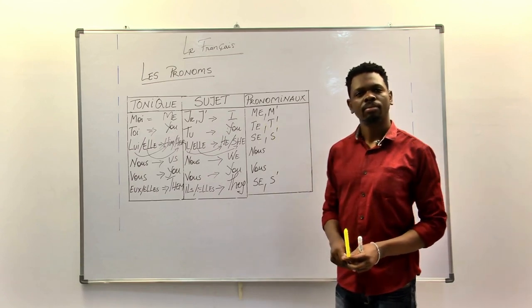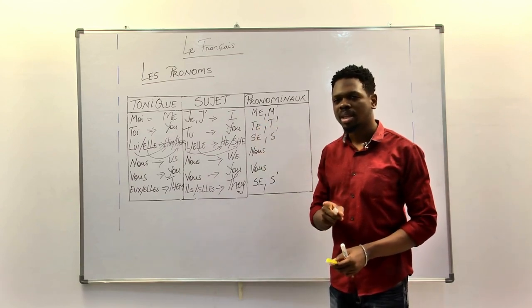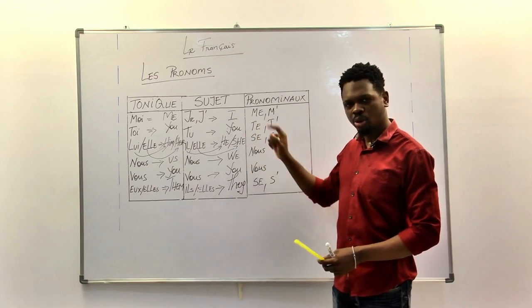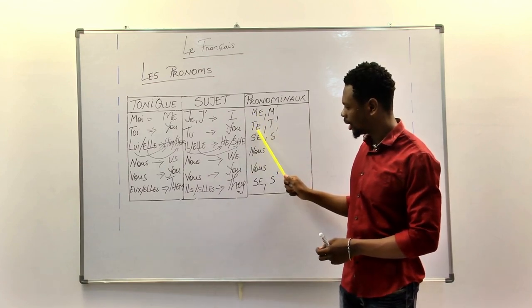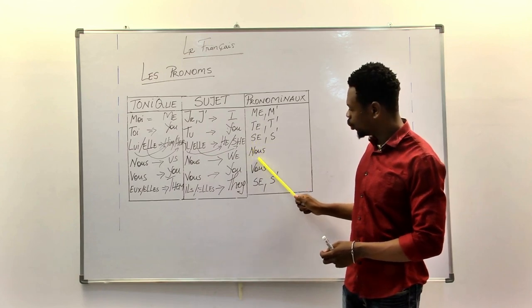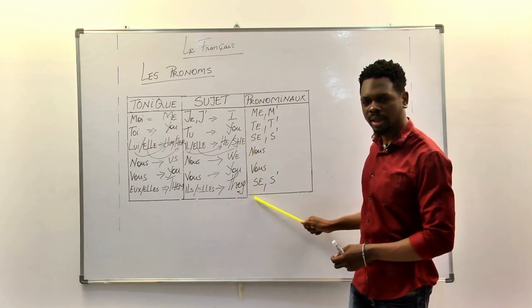They look like me but it's not me, it's me. So, we repeat again: me, te, se, nous, vous, se.